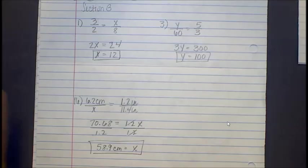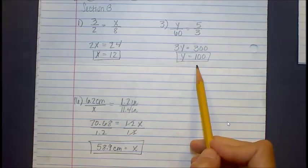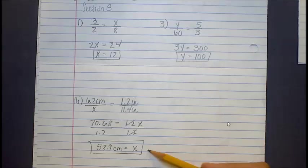I have the answers up here if you want to peek to see how you did. So for number one, you should be getting x equal to 12. Number three, y equals 100. And number 16, x is equal to 58.9.